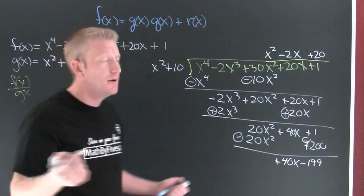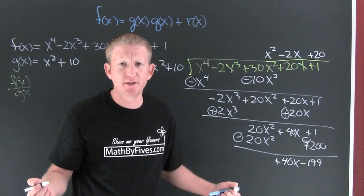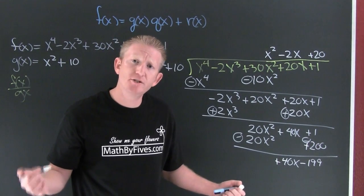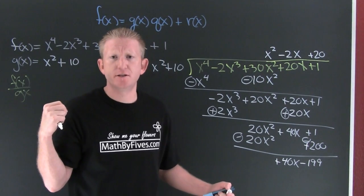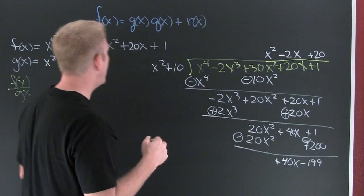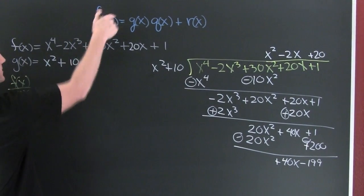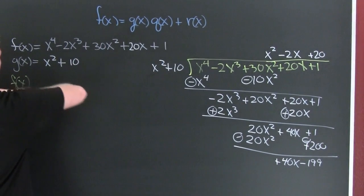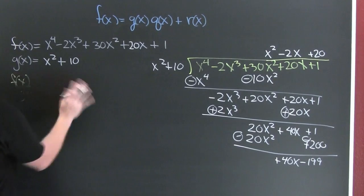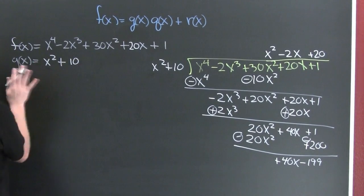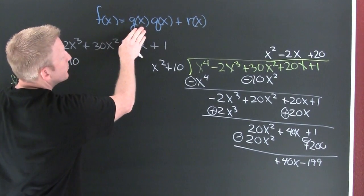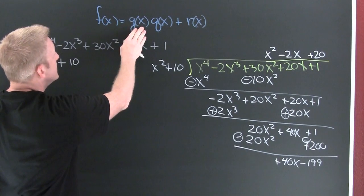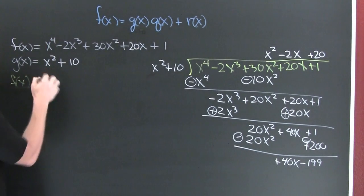I think that's the numbers, but I don't want you to lose sight of the forest by looking at the trees. What do I want you to do? I want you to write it using our division algorithm. This says we're going to be able to rewrite our f(x) as the product of g(x), that was our divisor.